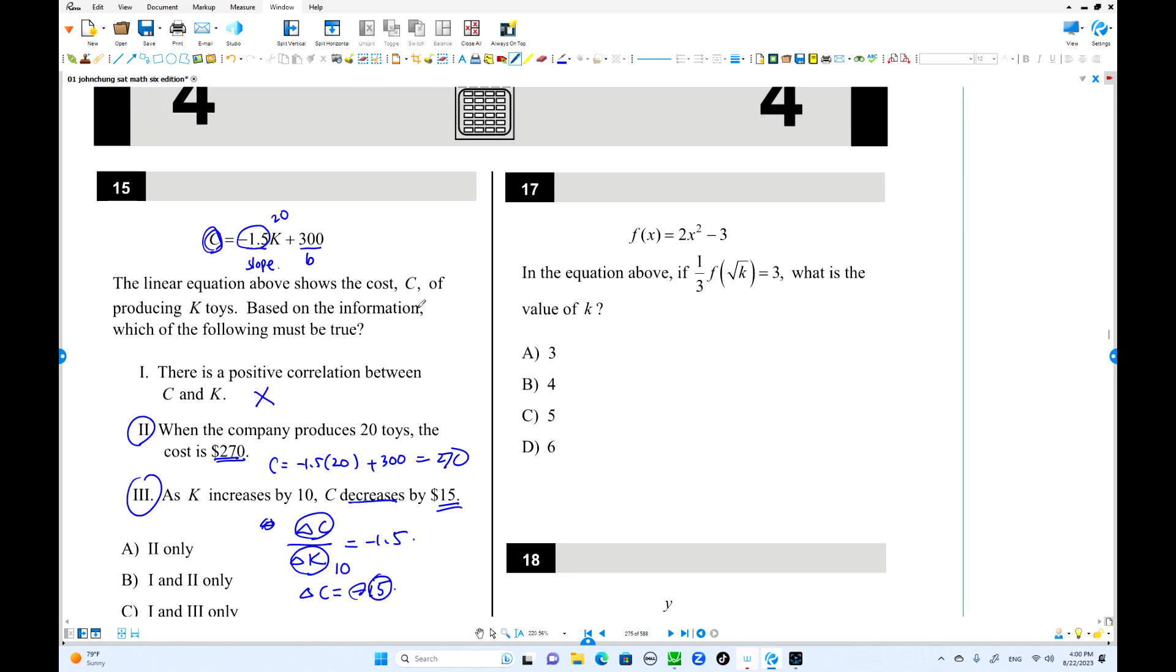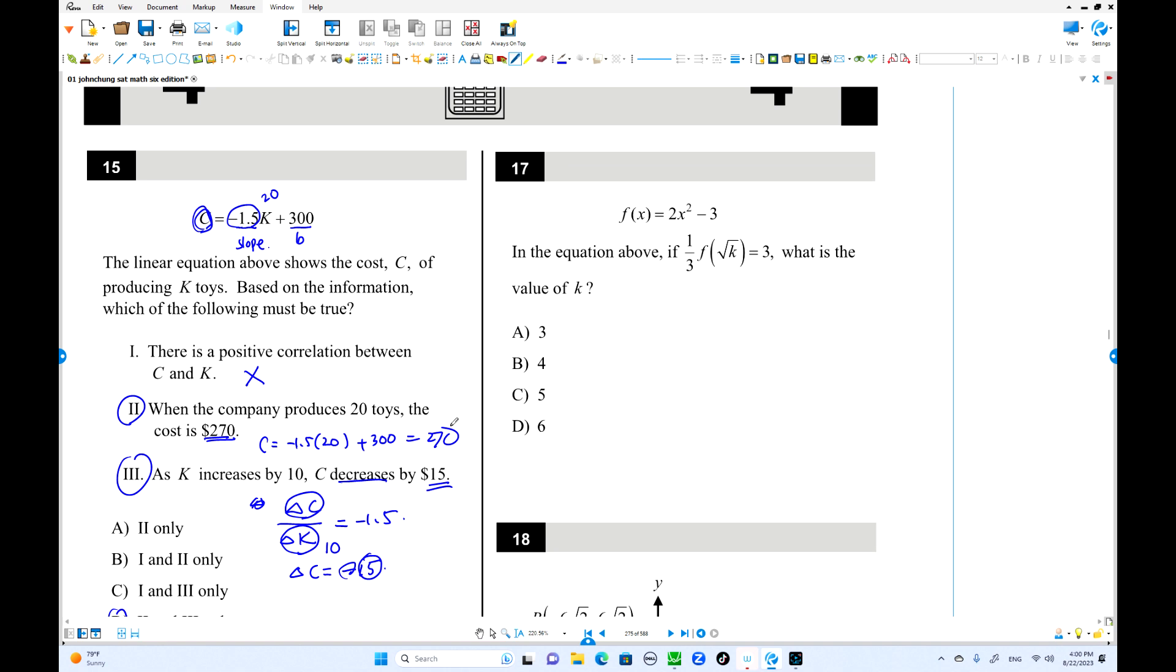This is number 16. 1 over 2. 1 third times f of square root k. Instead of x, we use k. Times 3. This is okay. So put this number over here. 2. Square root k squared is 2k minus 3. That equals times 3. Times 3 equals 9. So 2k equals 12. And k equals 6. That's the answer.